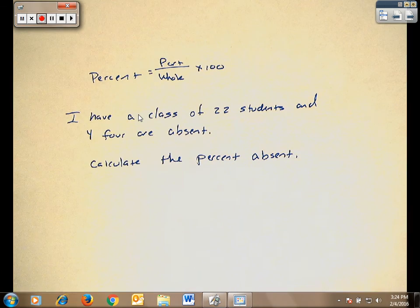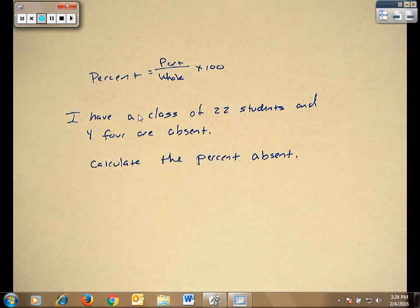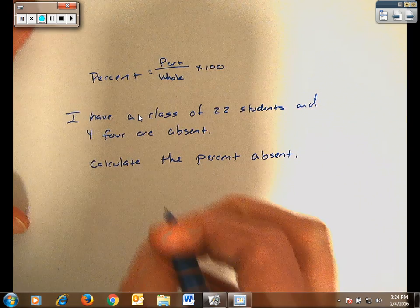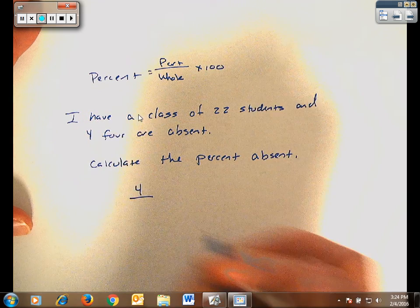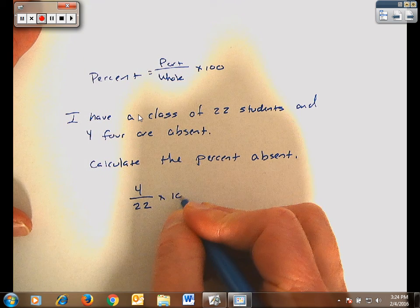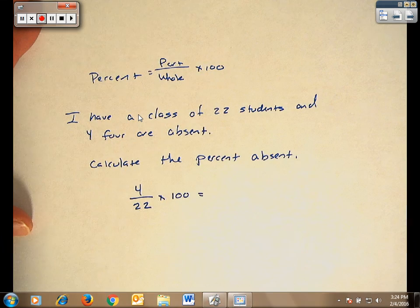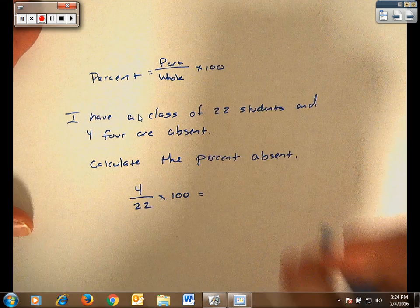To do the percent absent, our part would be the number of students that we were missing that day. The 4 students that are absent would be 4 divided by the whole, the number of students that are in that class, 22, times 100. Touch that in the calculator. That's 18%.